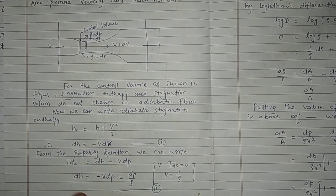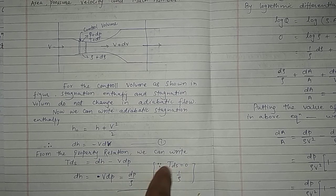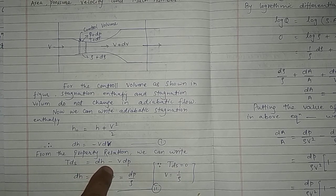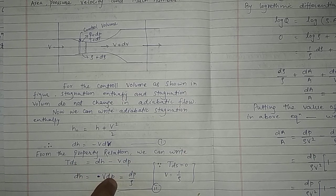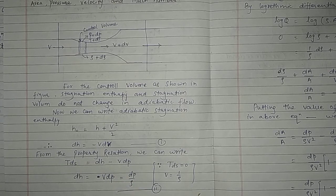Now, since the process is isentropic, dS equals zero, so T·dS equals zero. Therefore dH equals V·dP. And since V equals 1 upon rho, this gives dH equals dP upon rho. This is Equation 2.